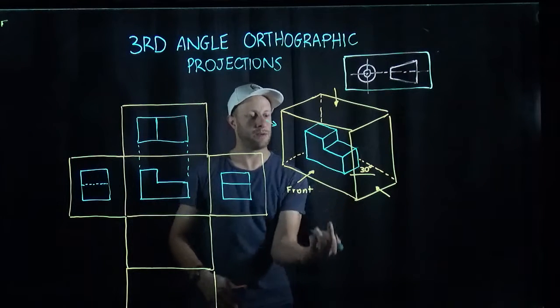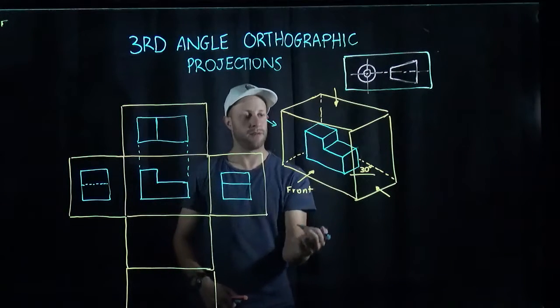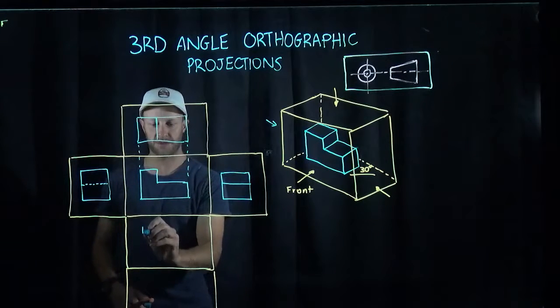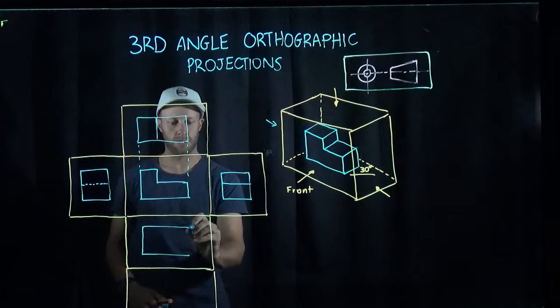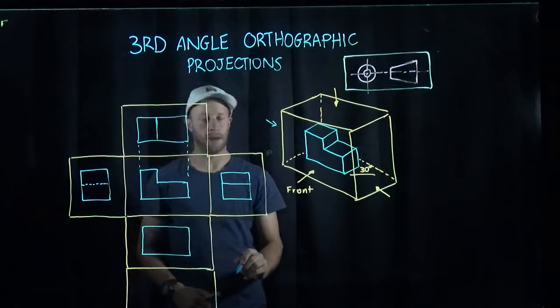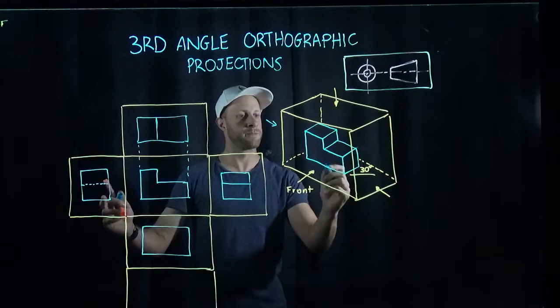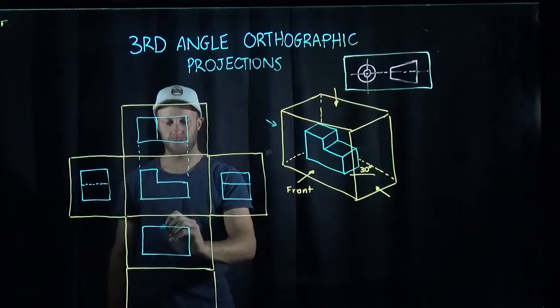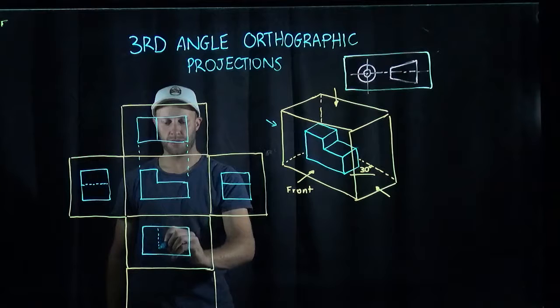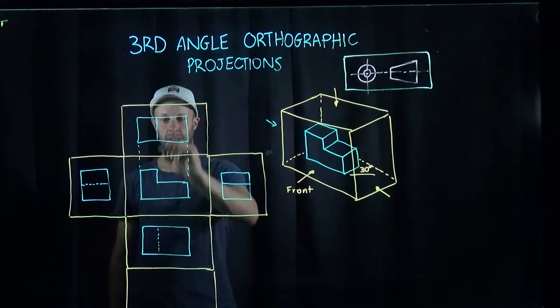Directly below, if I'm looking from the underside of my shape, I'm going to see a rectangle. Similar to the previous view, the step here won't be visible when looking from the underside. So I could, if I want to, draw a dashed line that lines up through here.